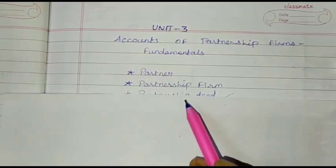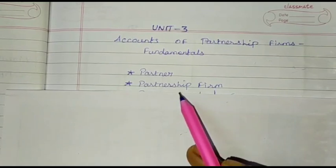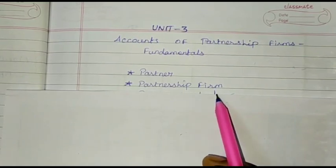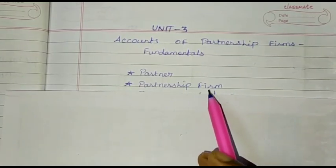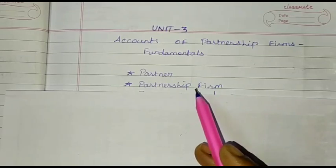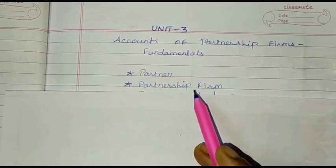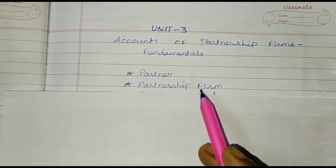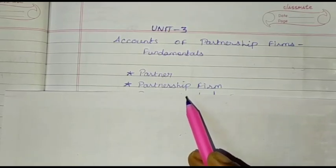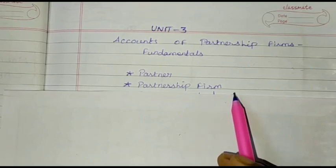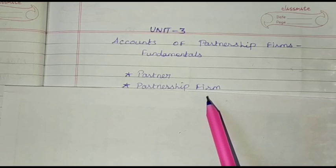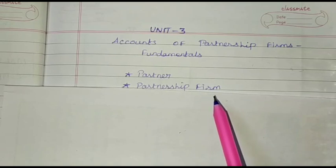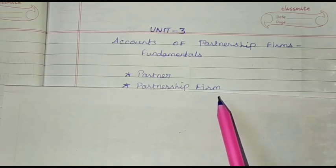Next one: Partnership Firm. A Partnership Firm is a form of organization where two or more persons carry on some business activity on the basis of agreement among them. The name under which the business of a firm is carried on is called the Firm Name.